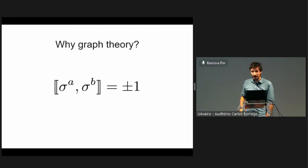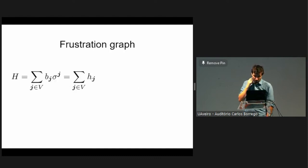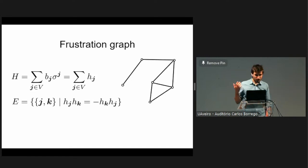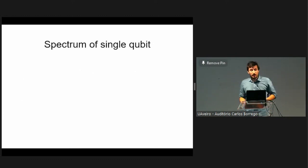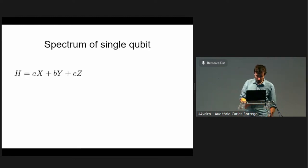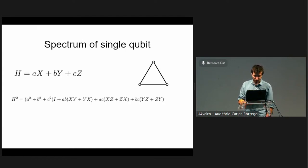Why graph theory? Because of this magical relation that Paulis either commute or anti-commute and nothing else. So you can say: if they commute, don't put a line; if they anti-commute, do put a line. That's exactly what the frustration graph is: each Hamiltonian term gets a vertex, and two vertices are connected by an edge if their corresponding Paulis anti-commute.